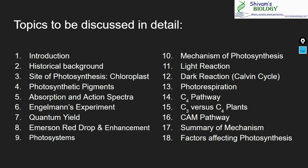Firstly, we will introduce the process of photosynthesis — it will be a very basic introduction since all of you already know what photosynthesis is. After that, we will see the historical background of photosynthesis, the site of photosynthesis — that is the chloroplast and its structure. After this, we will discuss photosynthetic pigments in detail, like chlorophyll, xanthophyll, and various other pigments.